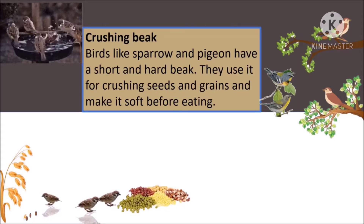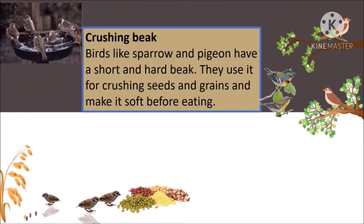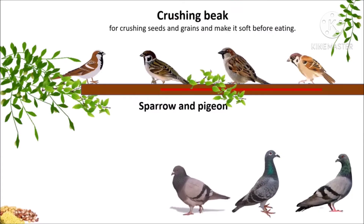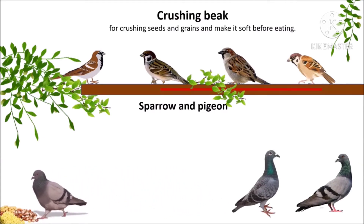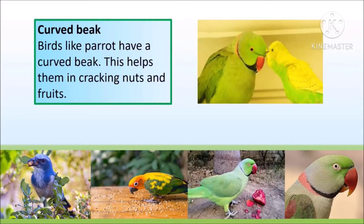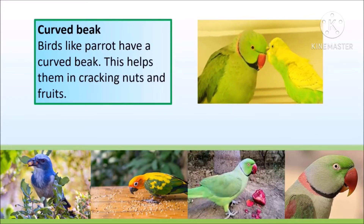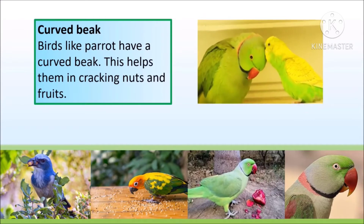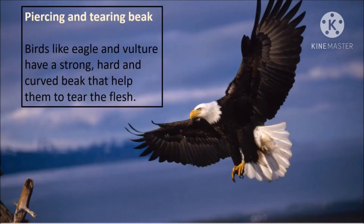There are different types of beaks: crushing beak, curved beak, piercing and tearing beak, chiseling beak, cropping beak, sifting beak and sticky beak. Birds like sparrow and pigeon have a short and hard crushing beak. They use it for crushing seeds and grains, making them soft before eating. You can see examples of crushing beak birds on the screen.